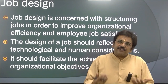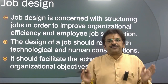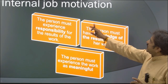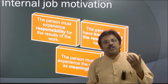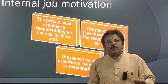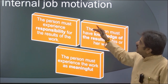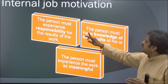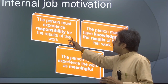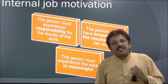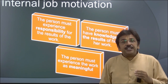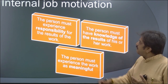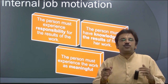For an organization to be effective, you must have a proper job system divided by job objectives. Regarding internal job motivation, there are three motivational factors. First, the person must experience responsibility for the result of the work — all activity is performed by a specific person and they should be accountable and responsible for their own work.